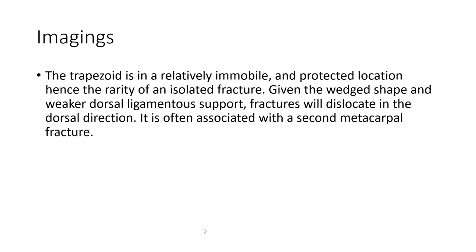The trapezoid is in a relatively immobile and protected location, which explains the rarity of an isolated fracture. Given the width, shape, and weaker dorsal ligamentous support, fractures will be dislocated in the dorsal direction. It is often associated with a second metacarpal fracture.